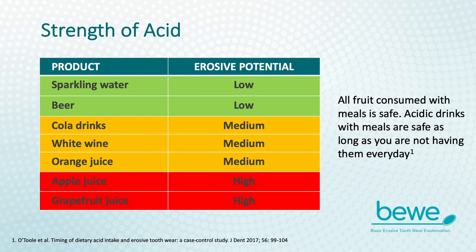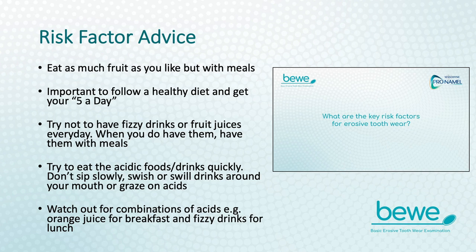Titratable acidity is a measure of the strength of the acid. Drinks such as apple or grapefruit juice have high erosive potential, whereas a cola drink has a medium potential. You can eat as much fruit as you like, but limit this to mealtimes. Follow a healthy diet but avoid sipping, swilling or holding drinks in your mouth.